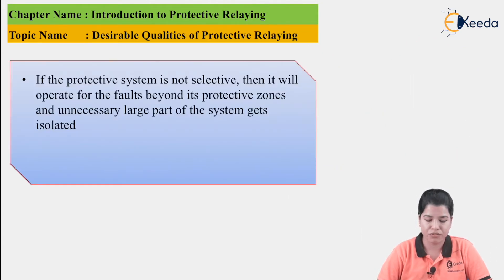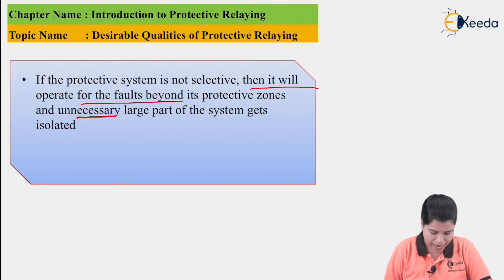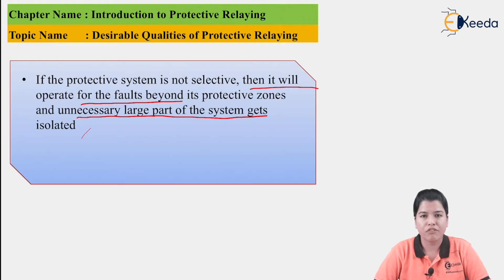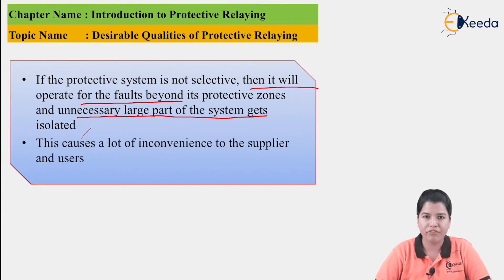If the protective system is not selective, it will operate for faults beyond its protective zone. The importance of selectivity and discrimination is that if the protective system is not selective, it will trip all circuit breakers in the faulty zone as well as neighboring zones. In this way, a large number of power system equipments will get affected and the power system will get isolated, causing great inconvenience to both supplier and user.